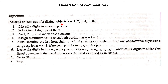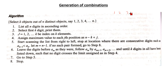There is an algorithm to select k objects out of n distinct objects, say 1, 2, 3, 4, up to n. List all n digits in ascending order. This algorithm also works on lexicographic ordering. Select the first k digits and print them. For index j from 1 to k, assign the maximum value to each j-th position as n minus k plus j.